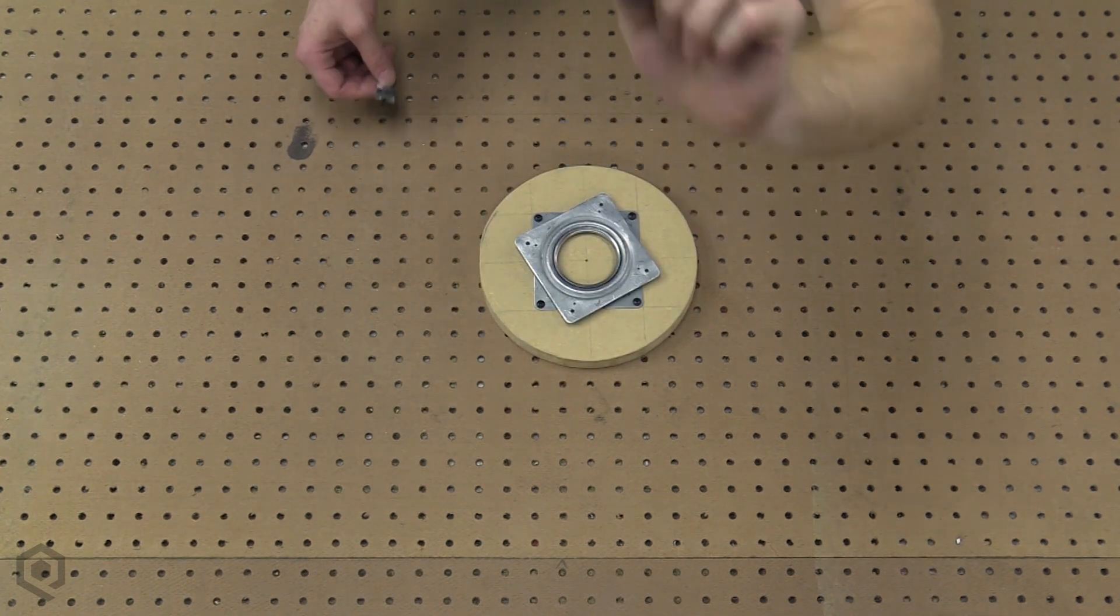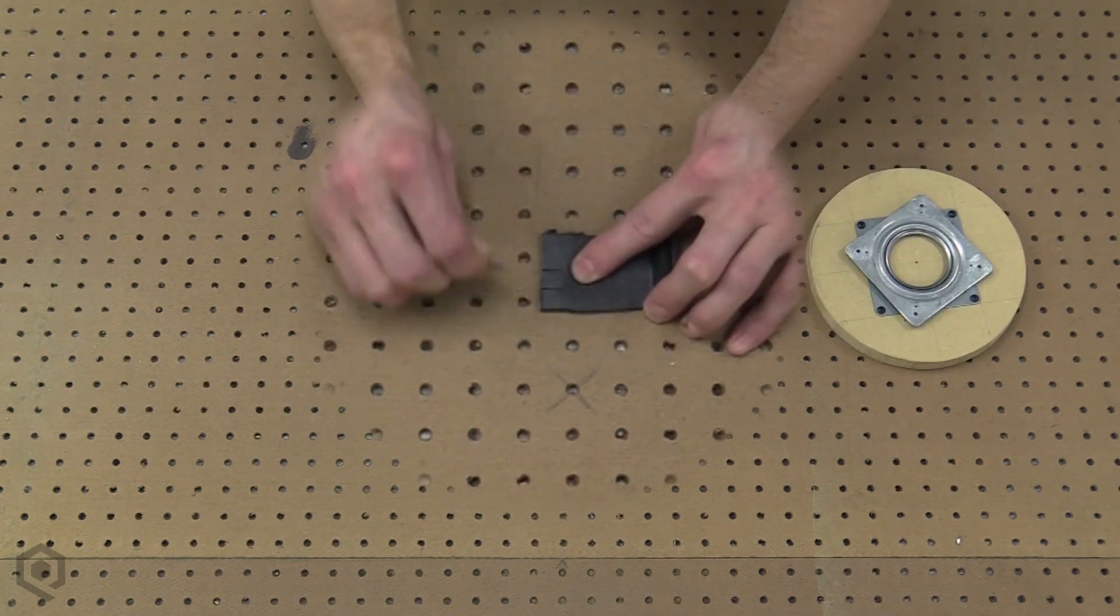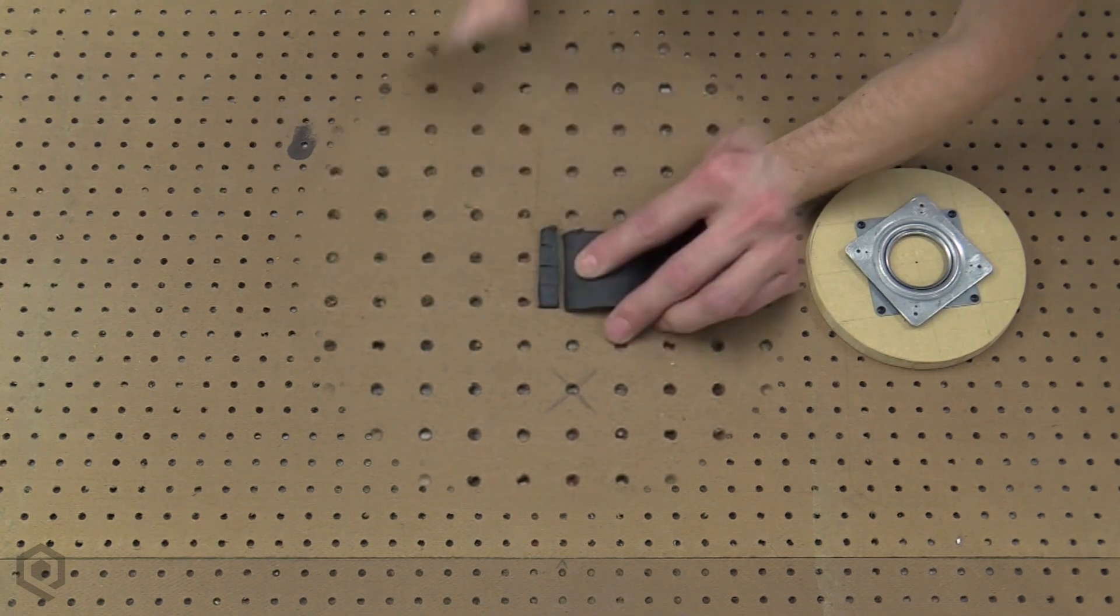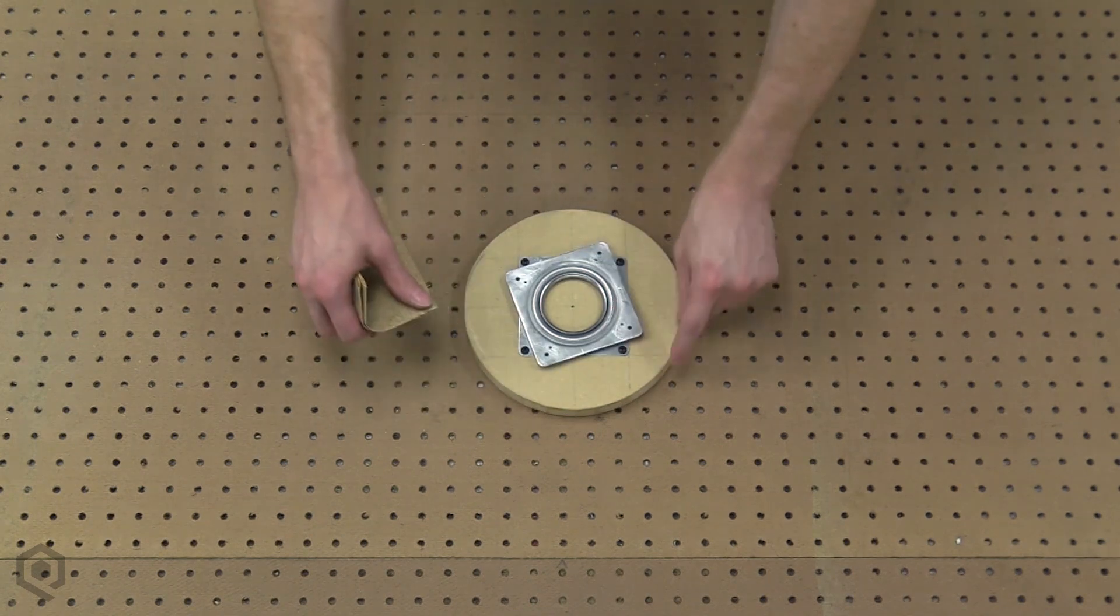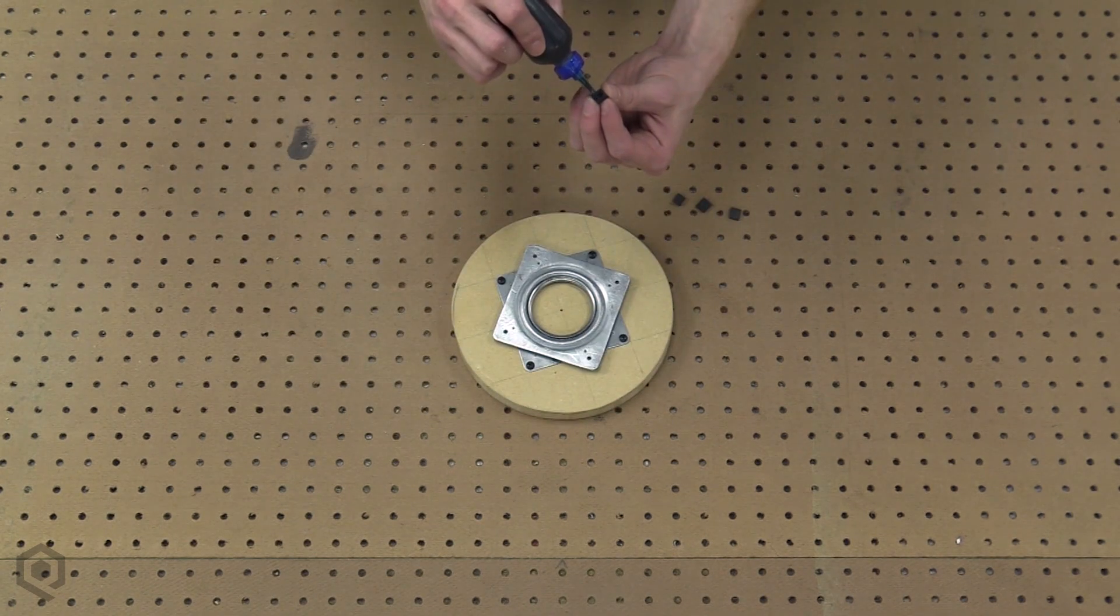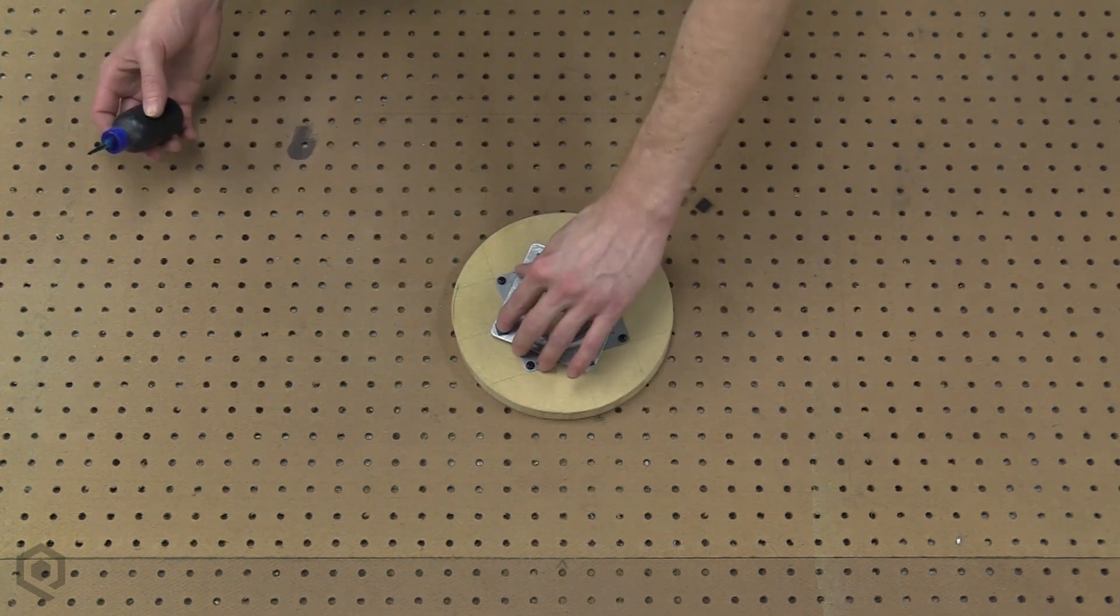Now grab that little piece of old surround or some craft foam. Weather stripping works too. Now very hazardlessly cut four small squares. Just kidding, do it carefully. Now grab your turntable, flip it over, and give the corners of the Susan a light scuffing so the glue sticks on better. Put some glue on the little foam squares you cut out and stick them on the Susan.